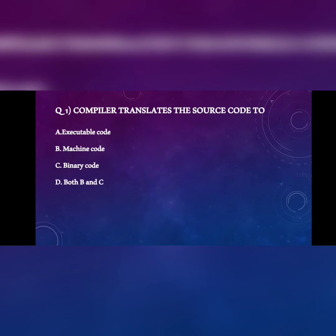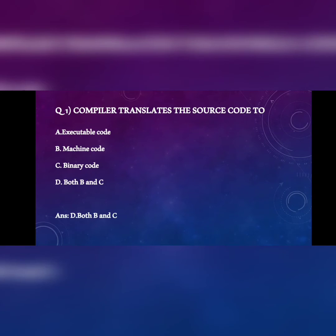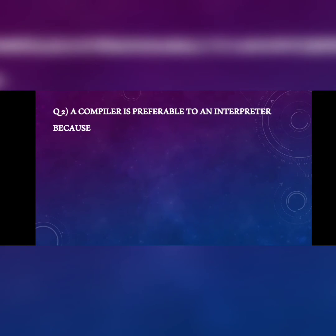If we discuss about executable code, that is runnable as a program. But if we discuss about binary code or machine code, machine code is a binary code — ones and zeros — directly executable by computers. So the answer for this question is D, that is machine code and binary code.